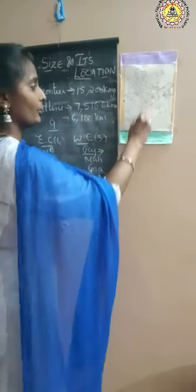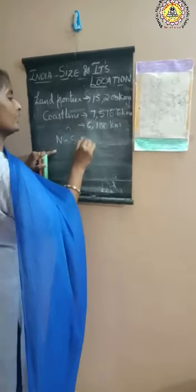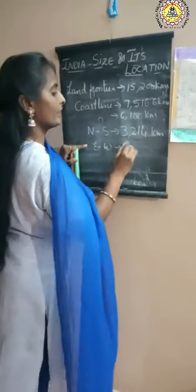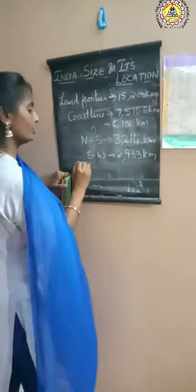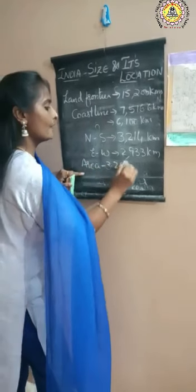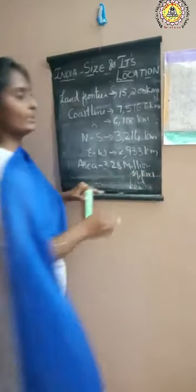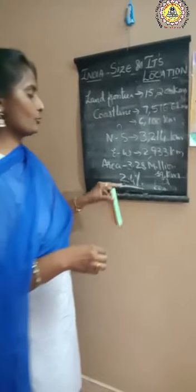The stretch of India from north to south is 3,214 kilometres, and from east to west it is 2,933 kilometres. The total land area of India is 3.28 million square kilometres, which means India covers 2.4 percent of the world's total area.